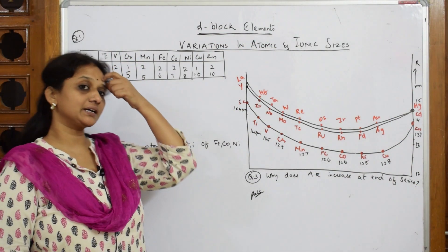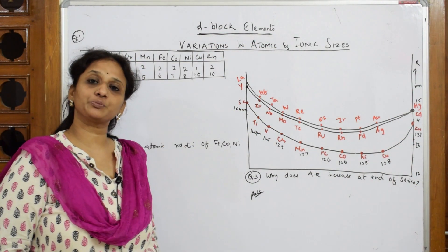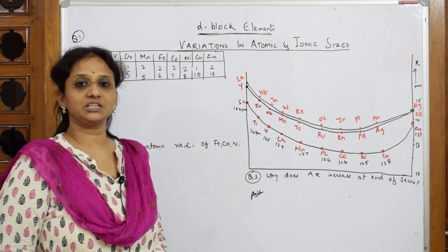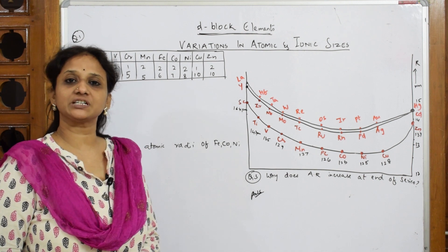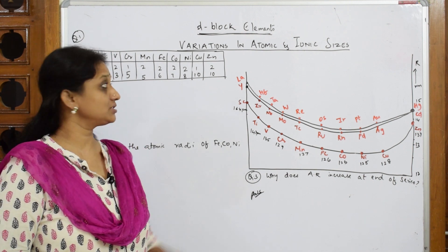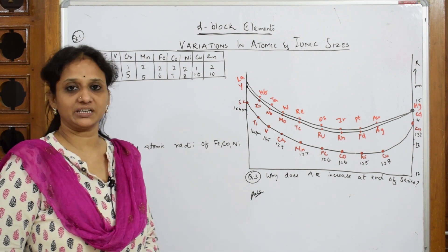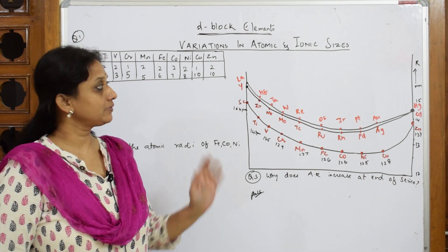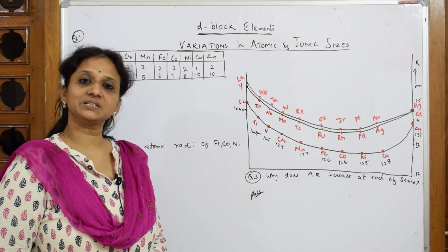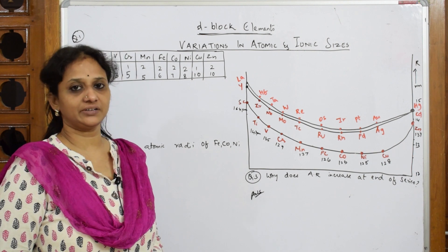Welcome back students. Let us come back and do the next property of d-block elements after electronic configuration, that is atomic radii. We will do both atomic radii and ionic radii.